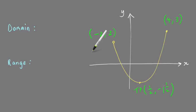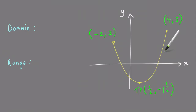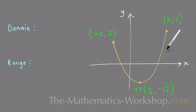Hi, it's Michael from the Mathematics Workshop. In this lesson I'm going to show you how to find the domain and range of this parabola. The domain is the set of x values that belong to the graph and the range is the set of y values that belong to the graph.